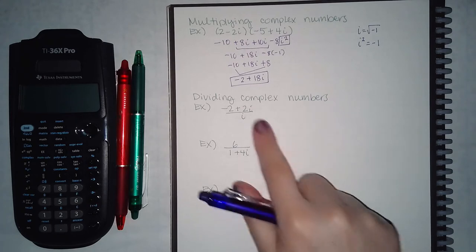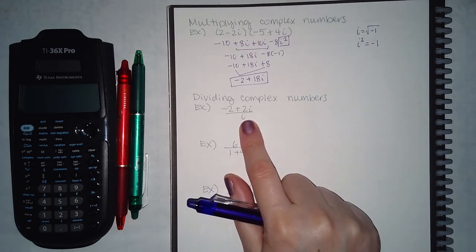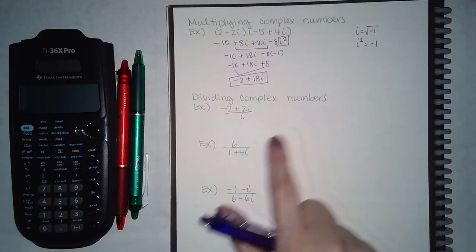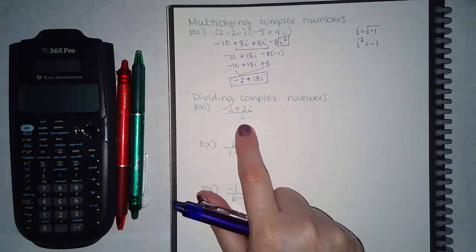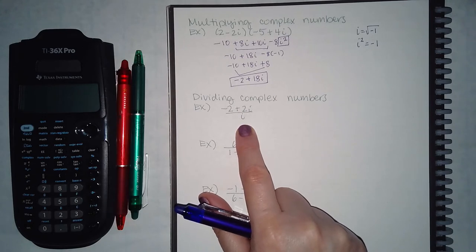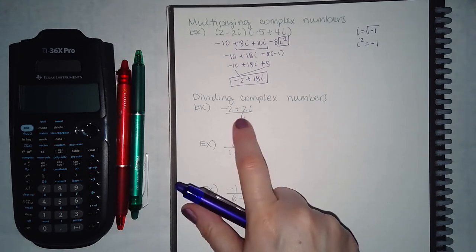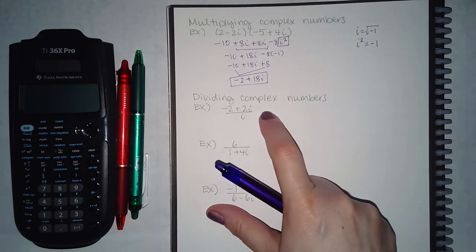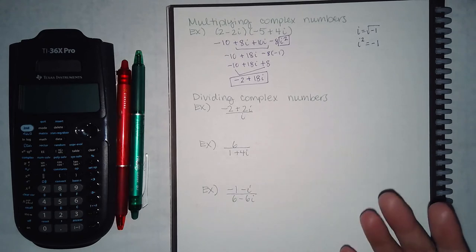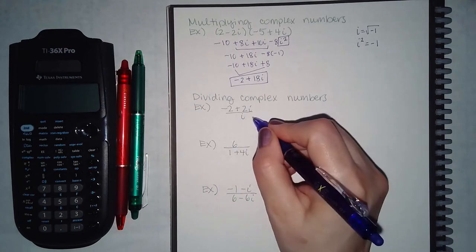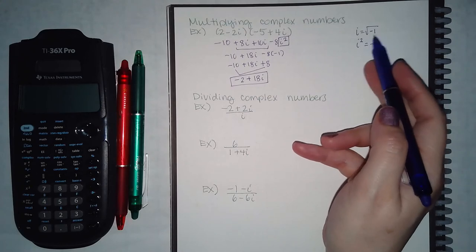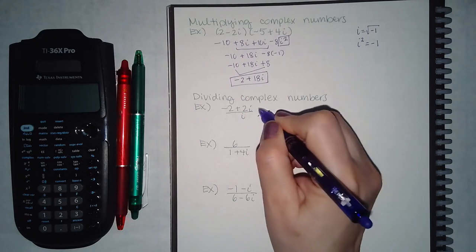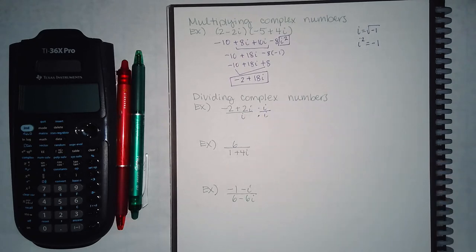For dividing complex numbers, remember that i is a square root. When you have a square root in the denominator, the strategy is to rationalize the denominator. Since i is the square root of negative 1, I need to multiply both the top and the bottom by i in order to rationalize it.